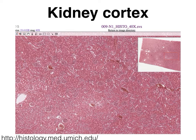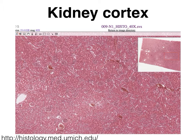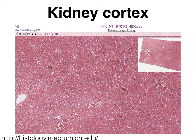Any slides of the kidneys pretty much look like the inset that you see here, and the thing to do is to scan through the slide at a very low magnification and locate the cortex. The cortex will very clearly show all of these little circular structures, and these are your Bowman's capsules with little capillary beds inside. We're going to focus on these by switching to a higher magnification.